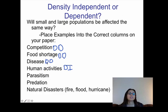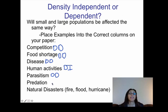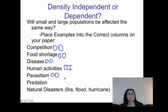Parasitism is very similar to disease — depending on population size, it could spread fast or slow. So that's density dependent. Predation is when animals hunt down and eat something else — a lion hunting a zebra is an example. If there's a large population of zebras, that's good for the lion population. If there's a small population of zebras, it's not. So predation is density dependent.